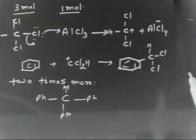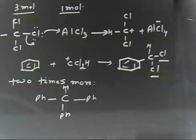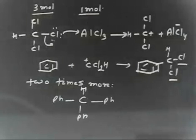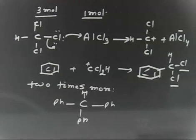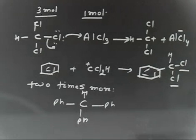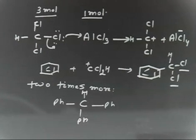You are generating the carbocation and attacking. You can still have 2 CHCl remaining, so you remove those 2 as well. The final product you will have is triphenylmethane — CHPh3. So simple. We will go for the next problem.